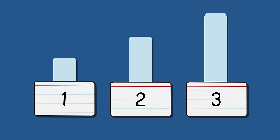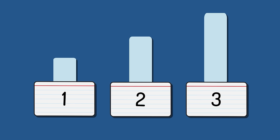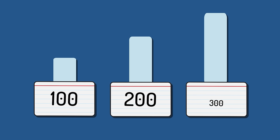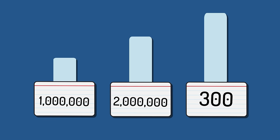Instead of assigning 1, 2, and 3, a team could instead have assigned 100, 200, and 300 — or 1 million, 2 million, and 3 million. It is the ratios that matter, not the actual numbers.